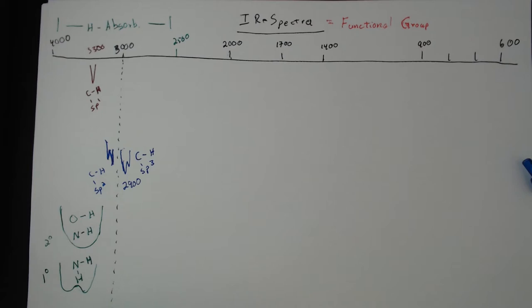These peaks can be the same height, they're usually spiky, and usually really close to the 3,000 line. If they're on the 2,900 side, that's a carbon hydrogen where the carbon is sp3 hybridized. Conversely, if it's on the 3,000 side, that's the carbon hydrogen peak where the carbon is sp2 hybridized. Some organic chemists like to distinguish between different sp2 carbons — aromatic carbons tend to be a little closer to 3,100 — but sp2 carbon hydrogen bonds tend to always show up right around the 3,000 to 3,100 range.